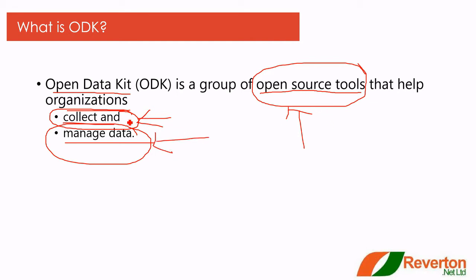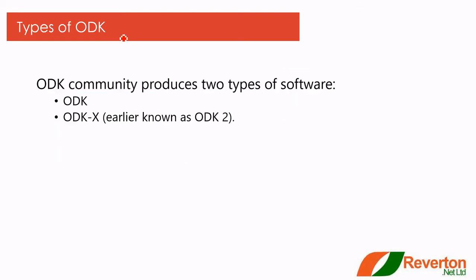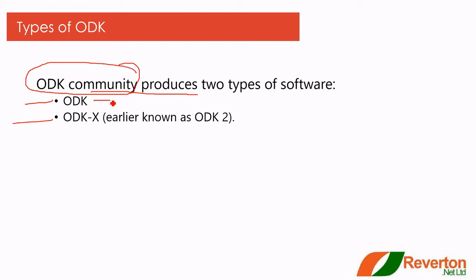Now let's move to types of ODK. There are two types of ODK produced by the ODK community. Right now there are two software versions: ODK 1 and ODK X. Previously ODK X was known as ODK 2, but it has been renamed to ODK X. In this ODK online class, we will teach you about ODK 1, not ODK 2 or ODK X.